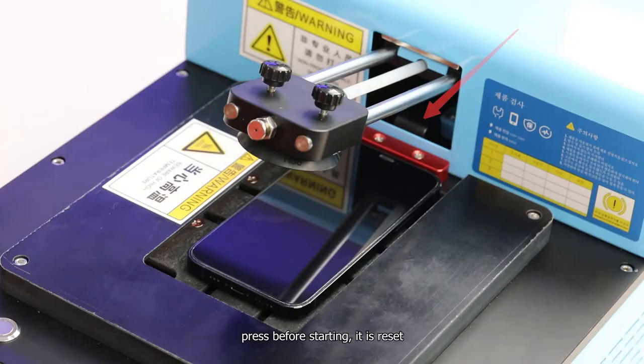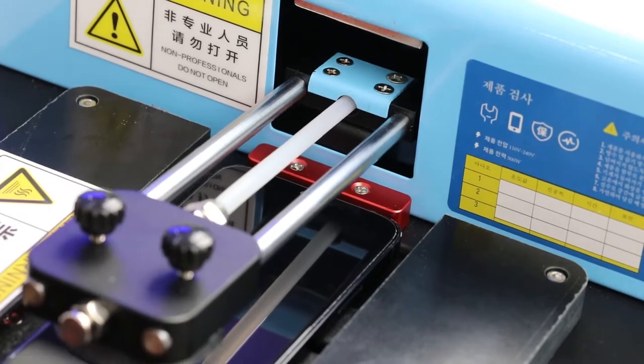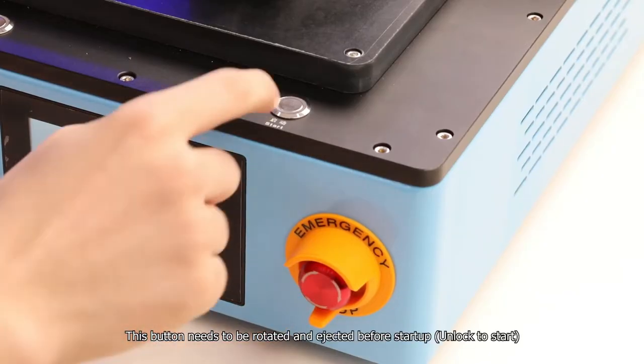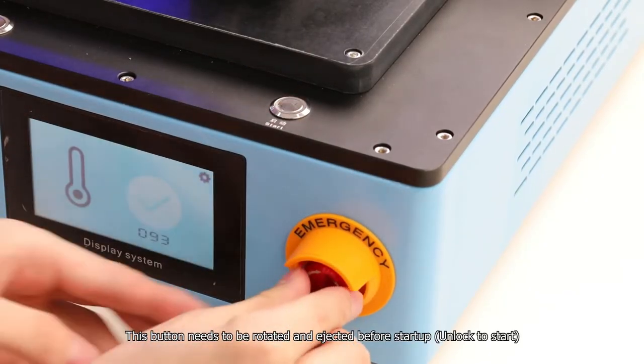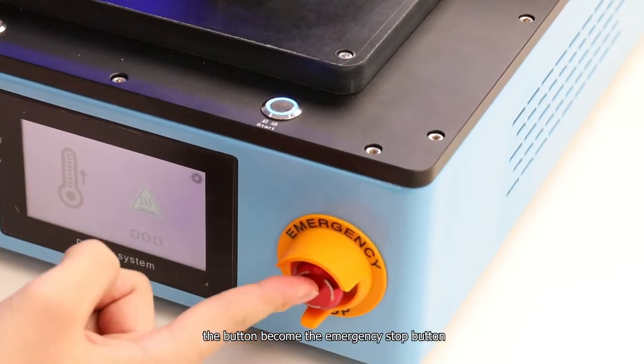Rotary button: Press before starting, it is reset. This button needs to be rotated and ejected before startup. After starting, the button becomes the emergency stop button.